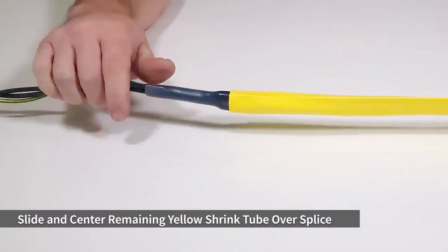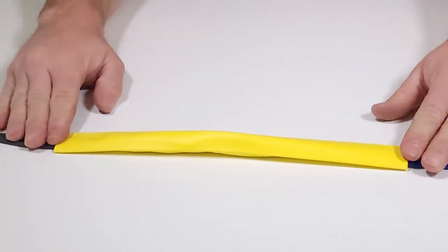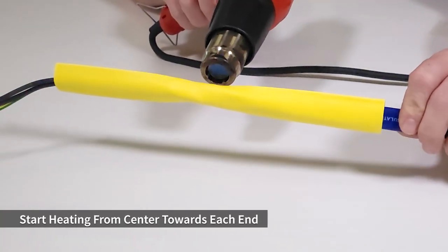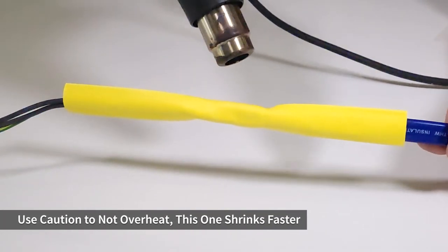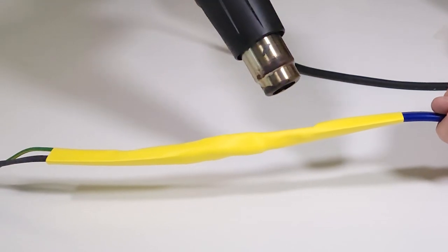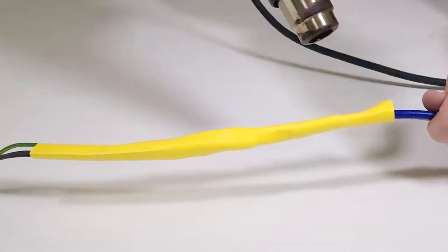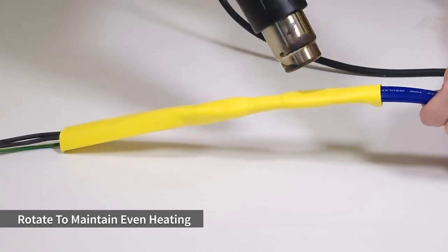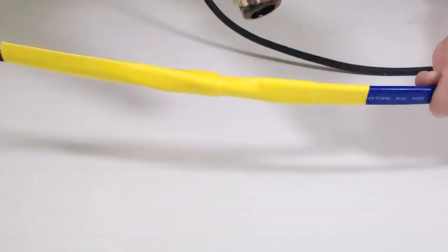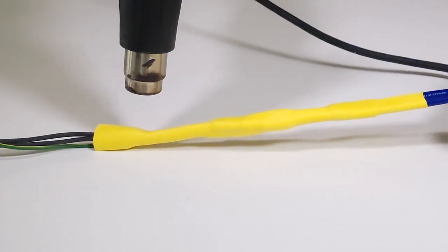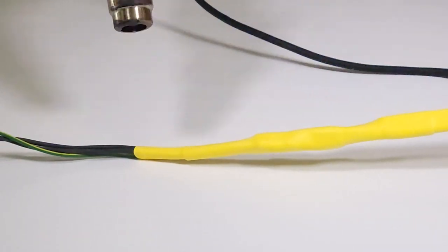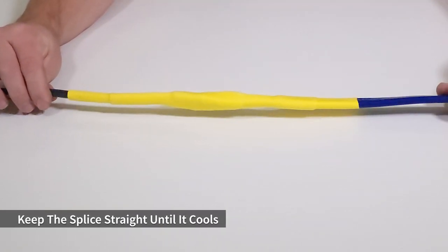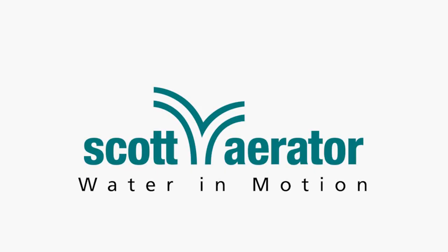Slide the remaining yellow shrink tube over the splice. Heat from the center outward until sealed. Keep the splice straight while cooling, and your new cable is now ready for use.